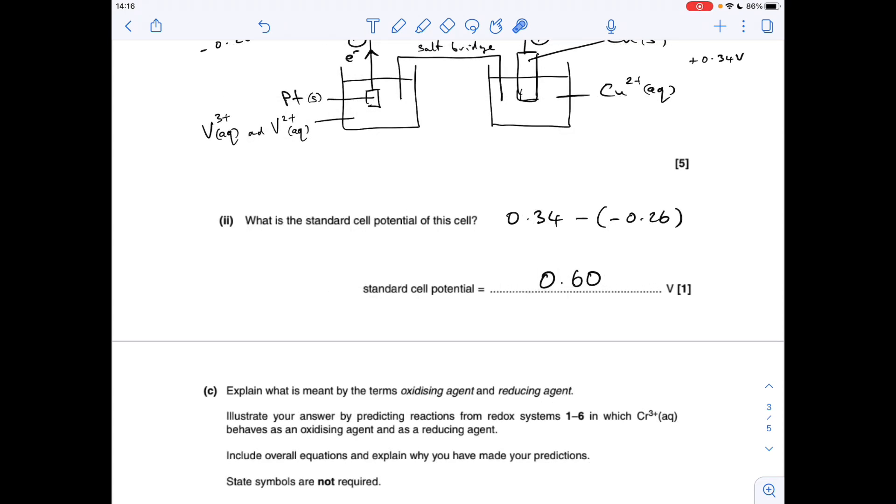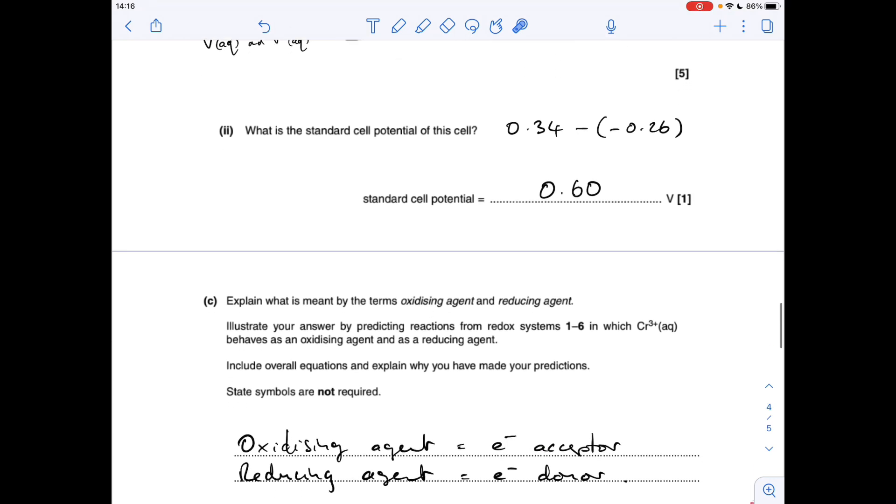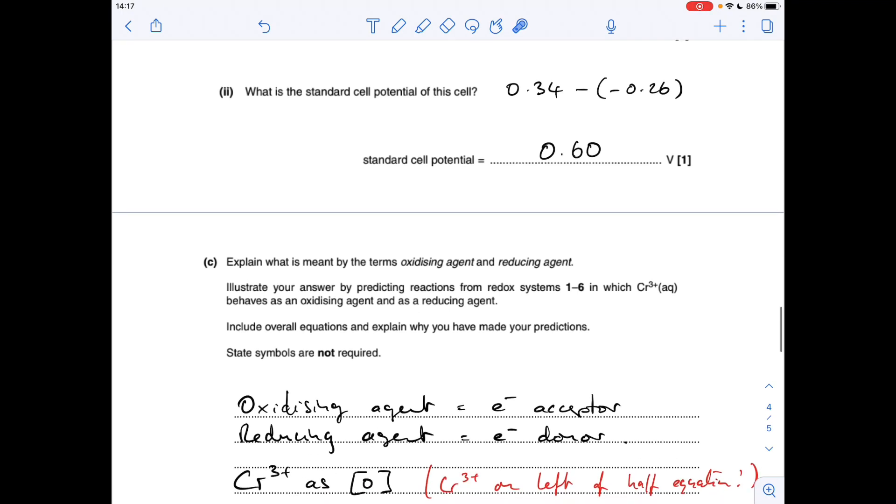Part C now, big six marker here. We've got to explain the terms oxidizing agent and reducing agent, and link that to redox reactions where chromium 3+ behaves as an oxidizing agent and a reducing agent. Starting with the definition, oxidizing agent is an electron acceptor, reducing agent is an electron donor.